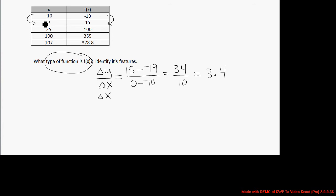From point 2 to point 3 in the table, we'd have change in y over change in x of 100 minus 15 over 25 minus 0, which is 85 over 25, which is also 3.4.